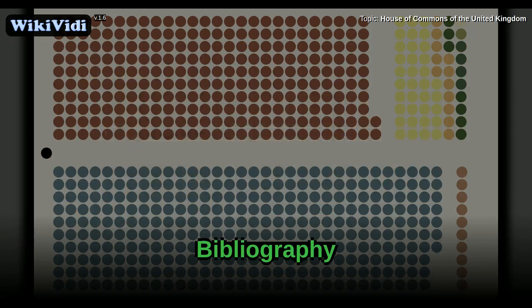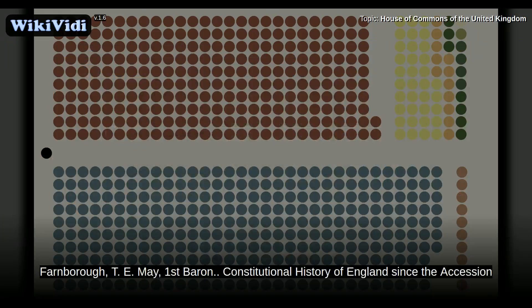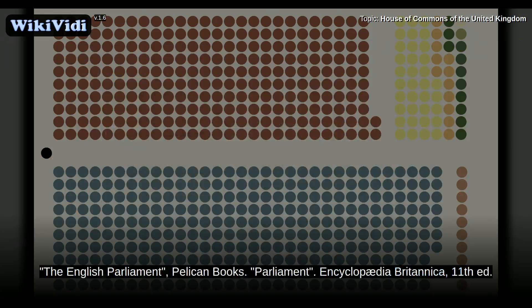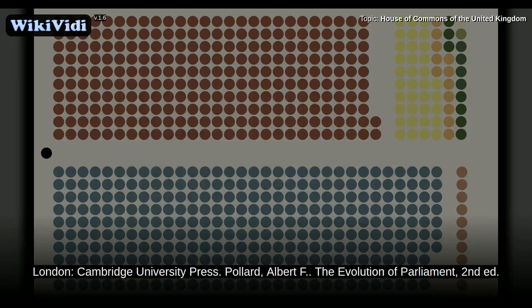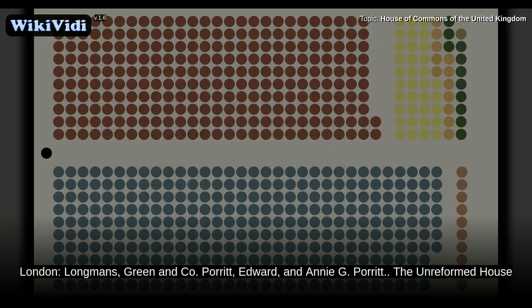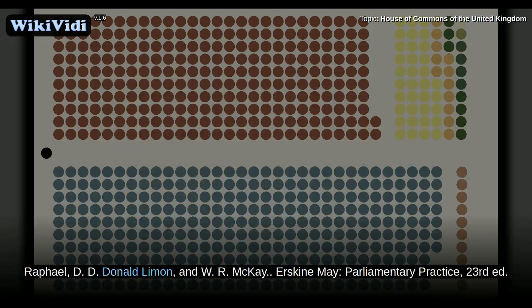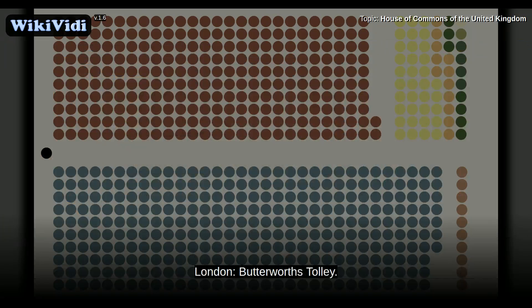Bibliography. Farnborough, T.E. May, 1st Baron. Constitutional history of England since the accession of George III, 11th ed. London, Longmans, Green and Co. McKenzie, K.R. The English Parliament, Pelican Books. Parliament. Encyclopædia Britannica, 11th ed. London, Cambridge University Press. Pollard, Albert F. The Evolution of Parliament, 2nd ed. London, Longmans, Green and Co. Porritt, Edward, and Annie G. Porritt. The Unreformed House of Commons: Parliamentary representation before 1832. Cambridge, Cambridge University Press. Raphael, D.D., Donald Le Mans, and W.R. McKay. Erskine May, Parliamentary Practice, 23rd ed. London, Butterworth's Tolly.